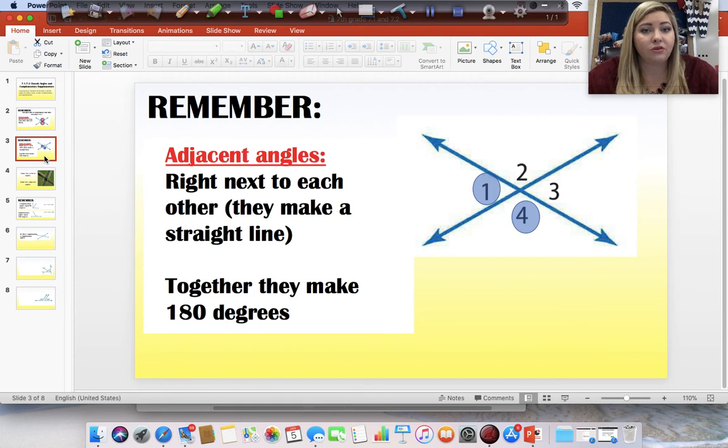A straight line is 180 degrees. So, if the two angles are next to each other, they are adjacent because they are next to each other and they equal 180 degrees. They form a straight line.